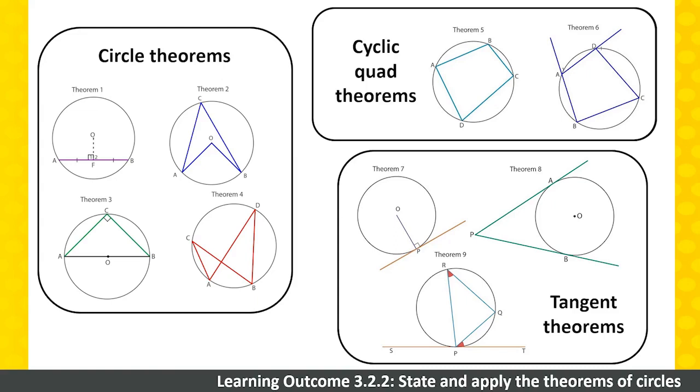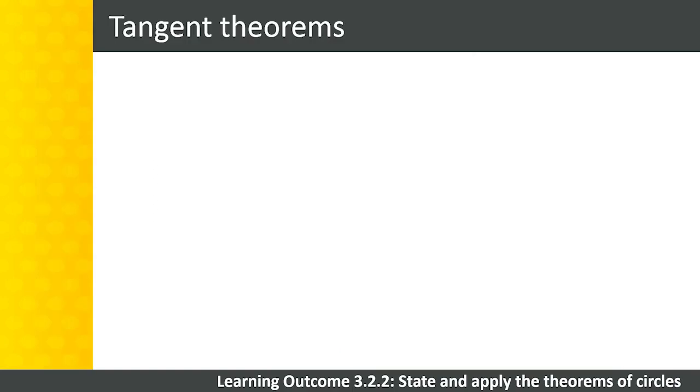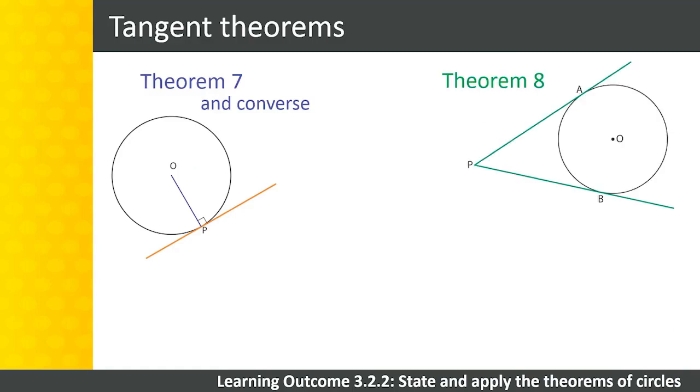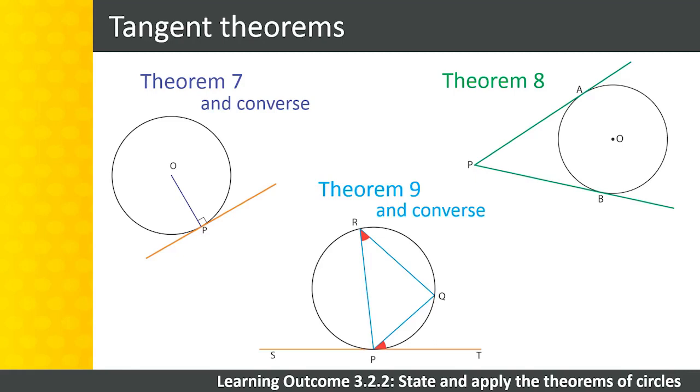So far, we have covered both the General Circle Theorems and the Cyclic Quadrilateral Theorems. Now we are going to have a look at the Tangent Theorems. There are five Tangent Theorems, including the Converses: Theorem 7 and its Converse, Theorem 8, and Theorem 9 and its Converse. Let's take a look at each one.